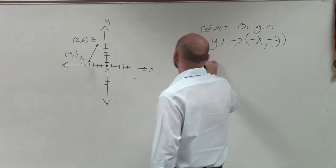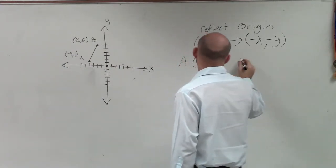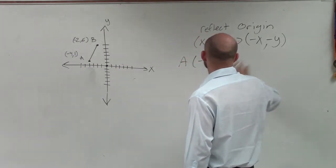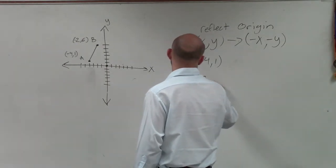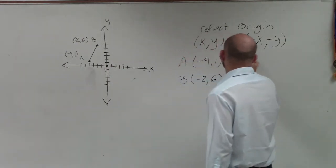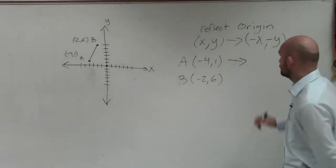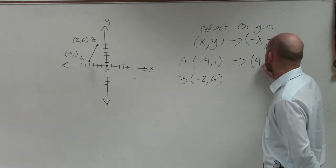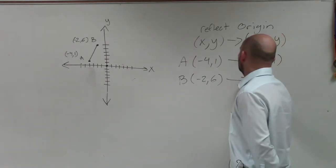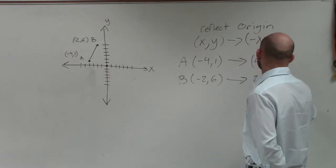So if I have A is (-4,1) and I have B is (-2,6), well, therefore, ladies and gentlemen, if I'm going to reflect about the origin, that now becomes (4,-1). And this now becomes (2,-6).